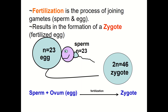Fertilization is the process of joining gametes. When sperm and egg combine, the result is called a zygote. So: sperm plus egg — also called an ovum — through the process of fertilization makes a zygote.